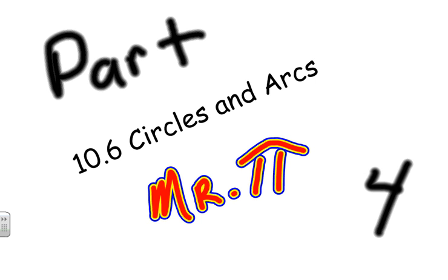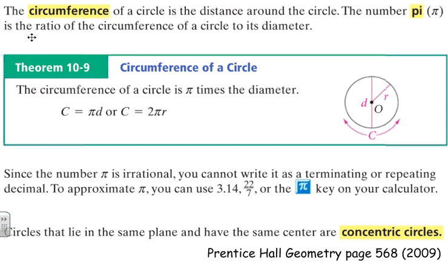In this lesson, we're going to be focusing on the circumference of a circle. The circumference of a circle is the distance around the circle. The number Mr. Pi, or pi, this Greek symbol right here, is the ratio of the circumference of the circle to its diameter. It's a ratio.